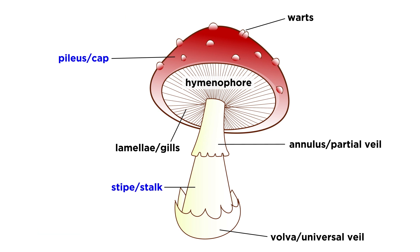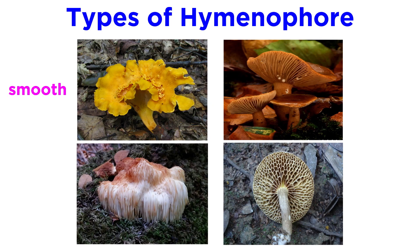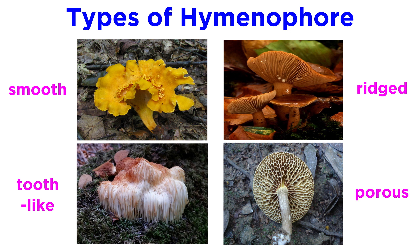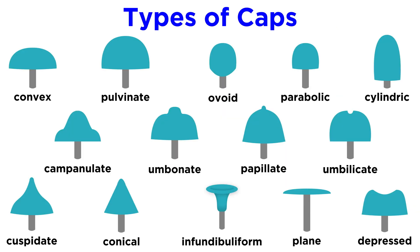Many mushrooms that we will discuss in this series have a cap and stipe, and they vary greatly in the structure of their hymenophore, or spore-producing structure. The hymenophore may be smooth, ridged, tooth-like, or porous. The caps of different mushrooms also have a number of descriptive terms, including plain, convex, cylindric, conical, cuspidate, and infundibuliform.